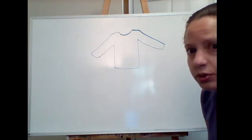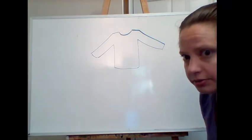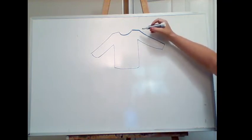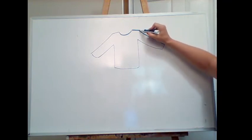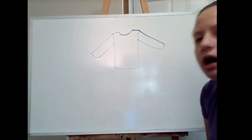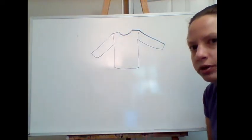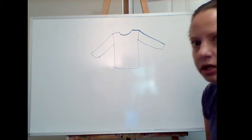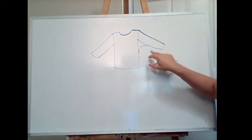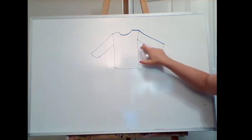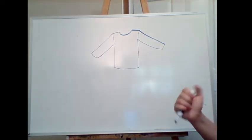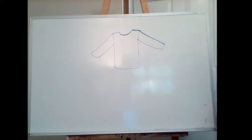First things first — same as wovens, we need armhole seams. There's nothing magical about knits that means we don't need armhole seams. The same exceptions to the rule apply — if you have a big saggy dolman sleeve with extra excess under the armpit, you don't need it. That applies the same here in knits as it was in wovens.